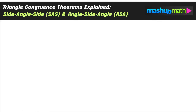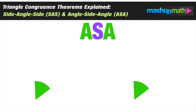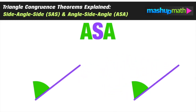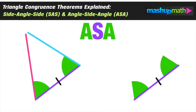Now we can look at angle side angle. This theorem says that if we have two triangles with a set of congruent angles along with a congruent side and another congruent angle, such that the side is in between the two congruent angles, we have enough information to say that the two triangles are congruent.